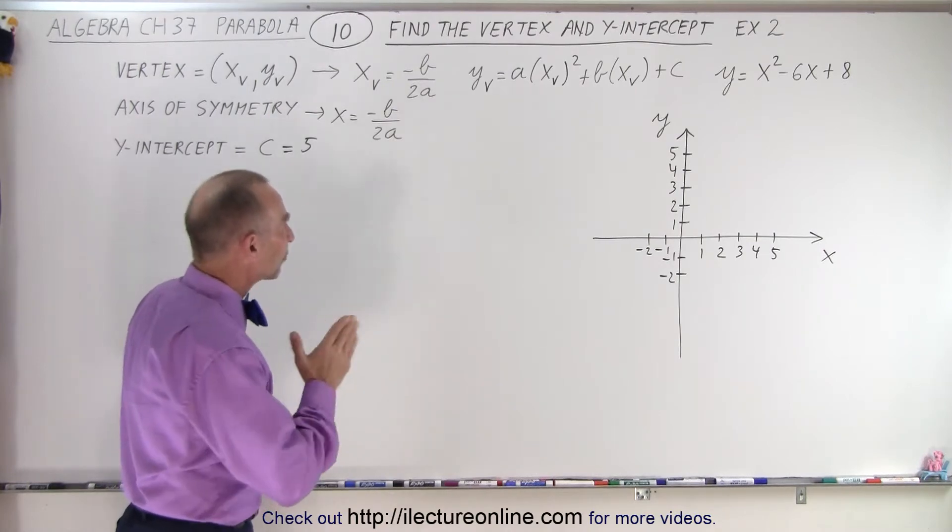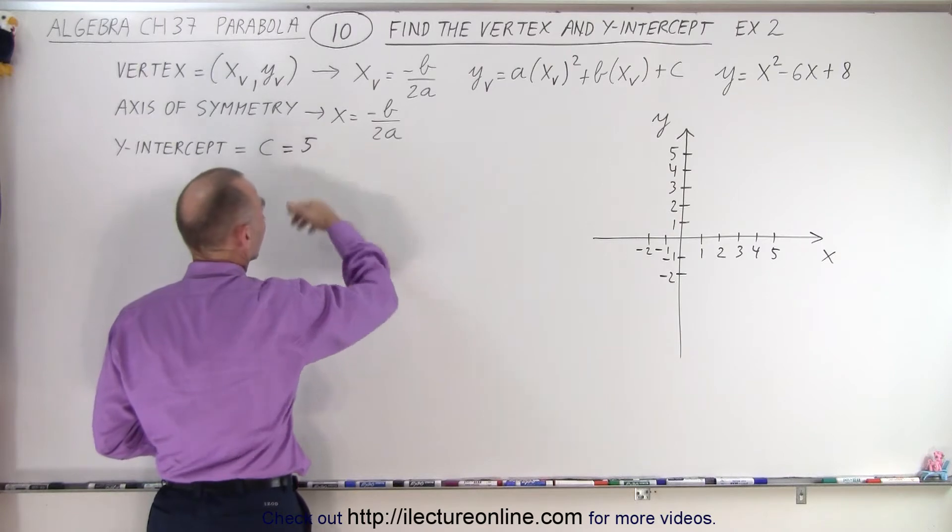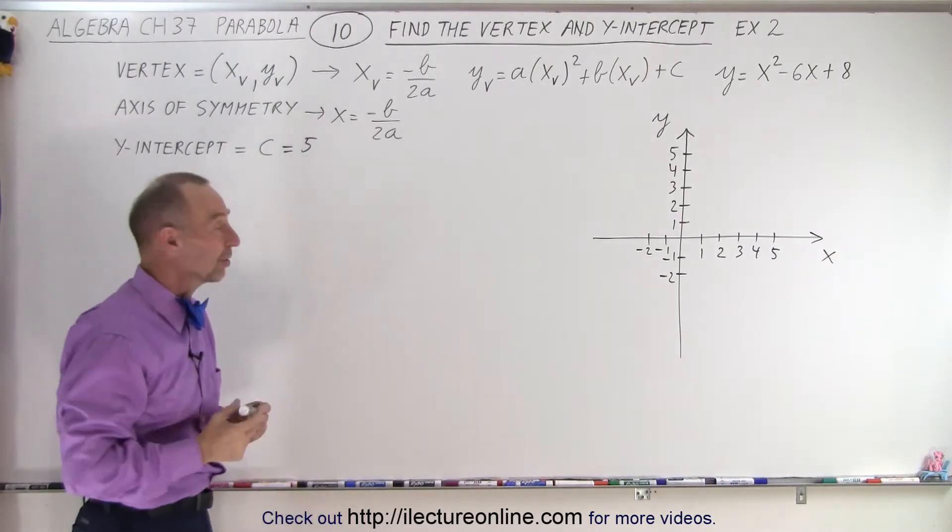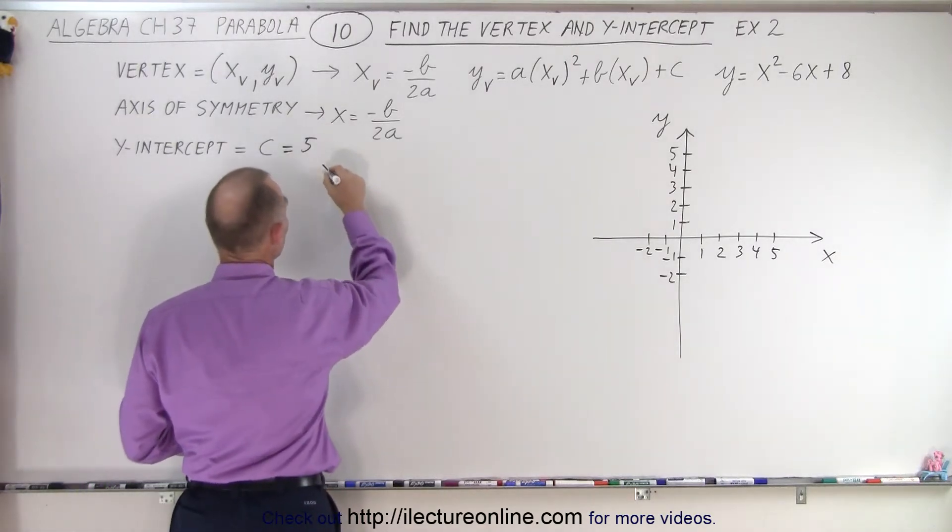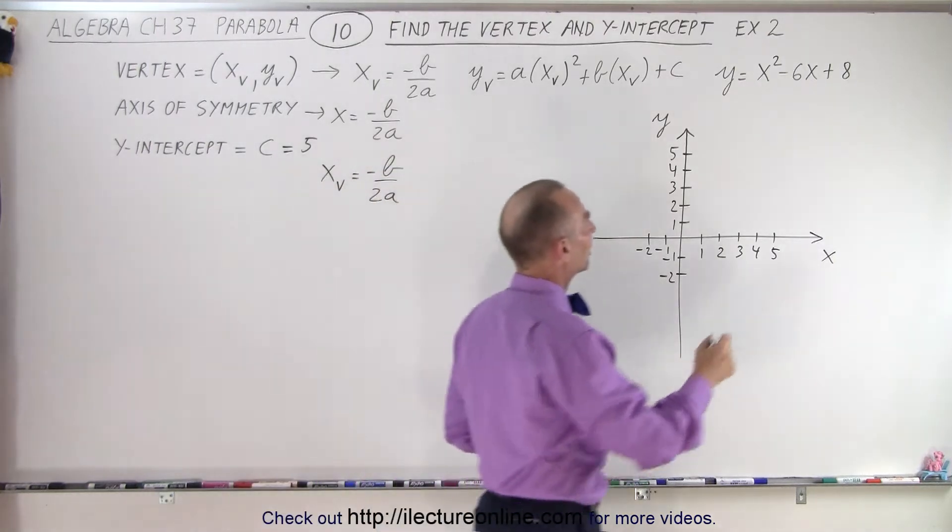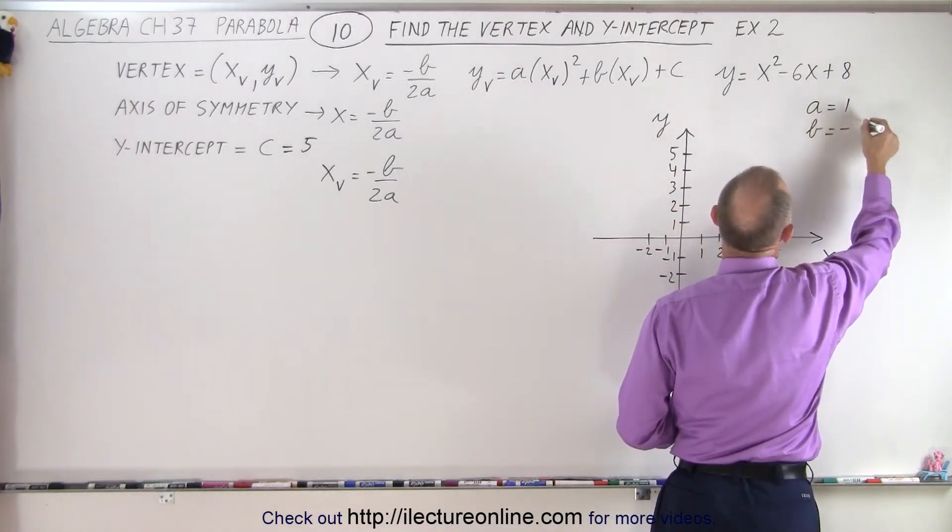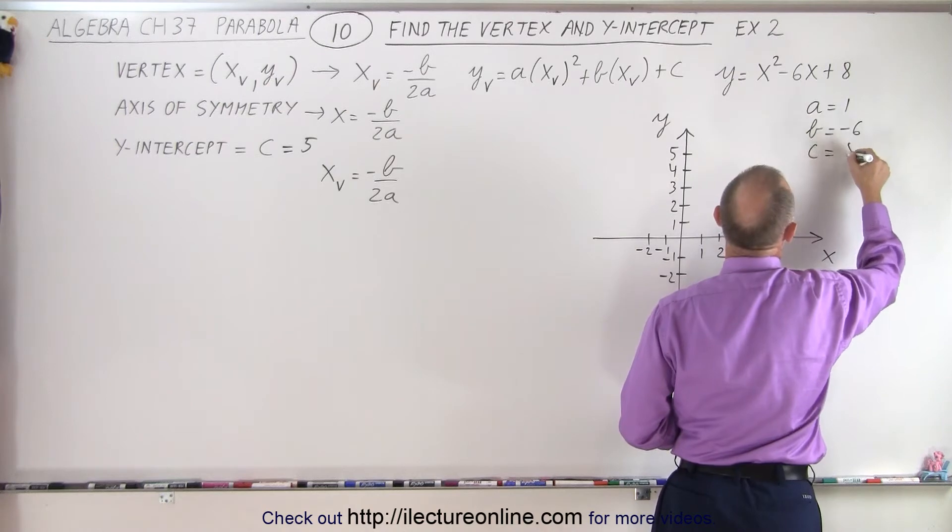So first we want to find the x-coordinate of the vertex, which is the same as the x or the equation representing the axis of symmetry. So x sub v, the x-coordinate of the vertex, is equal to minus b over 2a. Notice in this case that a is equal to 1, b is equal to minus 6, and c is equal to 8.